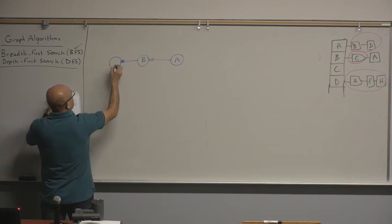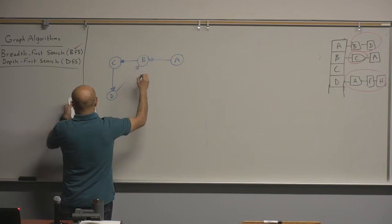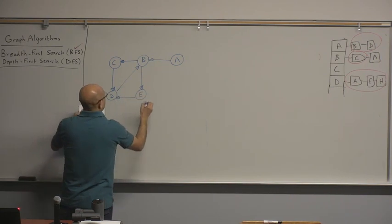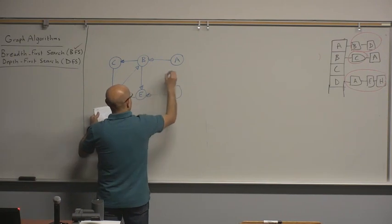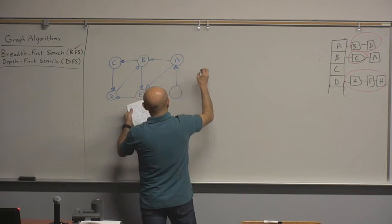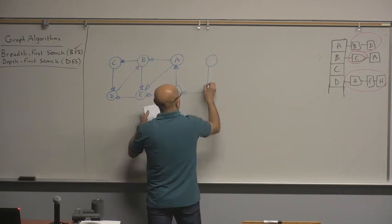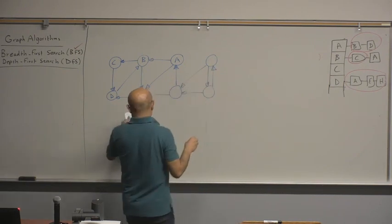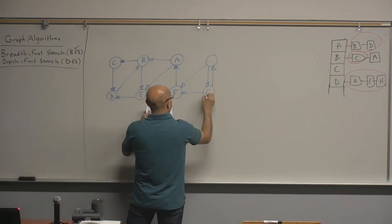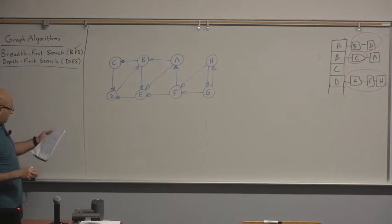This is going to be C, D, and E. We'll have another vertex, and we'll have two edges in both directions. So we'll call the vertices A, B, C, D, E, F, G, H. And these are all the edges that we have.